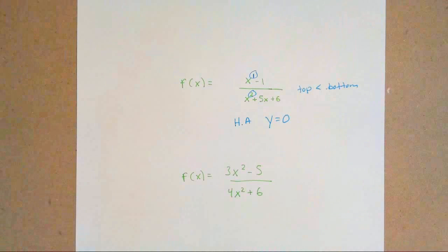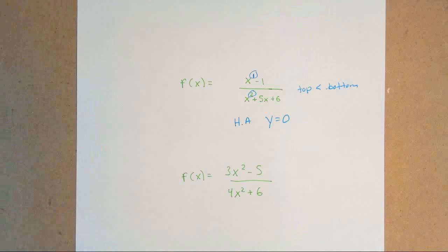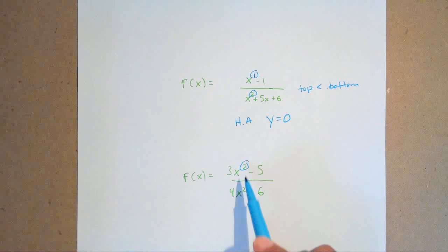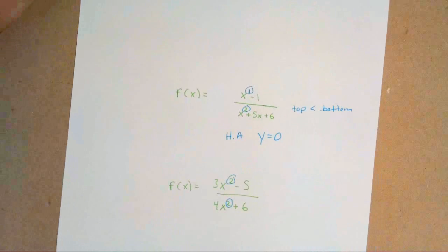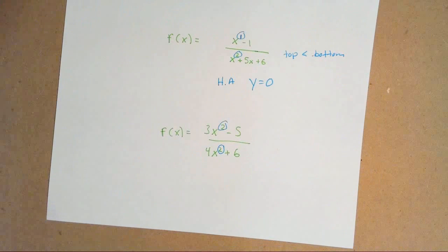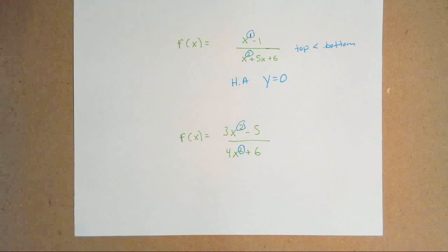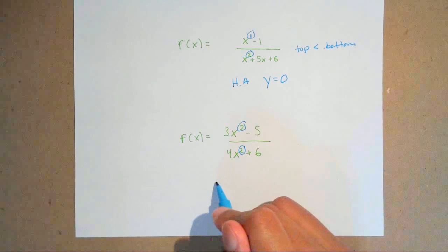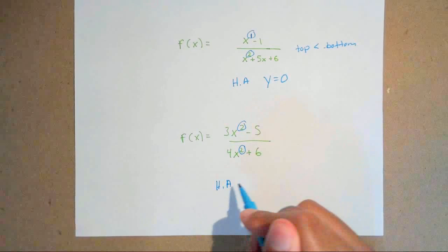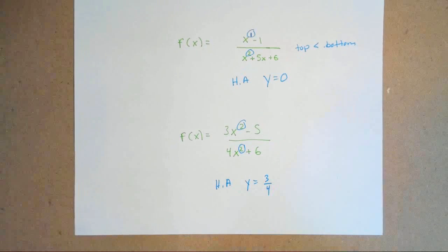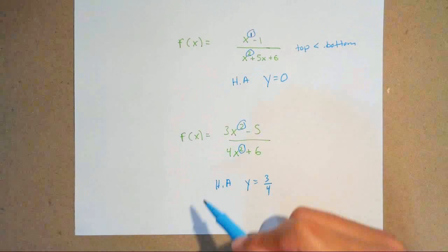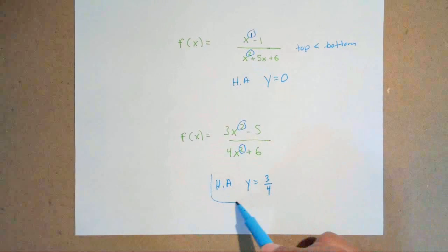Lastly: three x squared minus five over four x squared plus six. Both degrees are two, so I have to divide the leading coefficients — the numbers in front of my x squared on top and bottom, which are three and four. My horizontal asymptote is y equals three over four. If you can simplify, simplify; if not, that's your final answer.